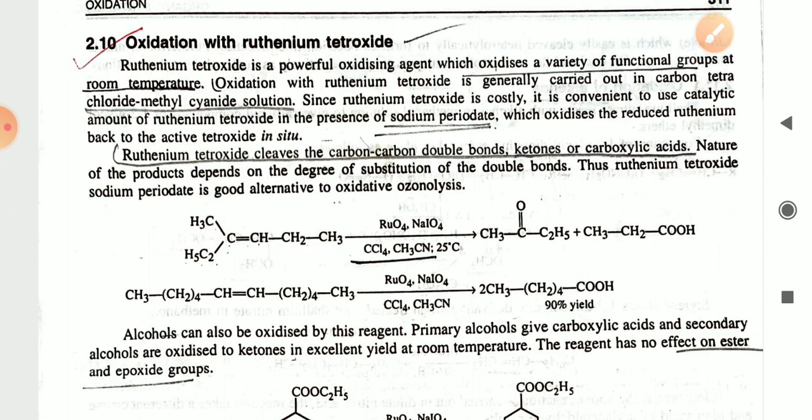The oxidation with ruthenium is generally carried out in a carbon tetrachloride and methyl cyanide (acetonitrile) solution. Since ruthenium tetraoxide is costly, it is convenient to use it as a catalyst in the presence of sodium periodate.